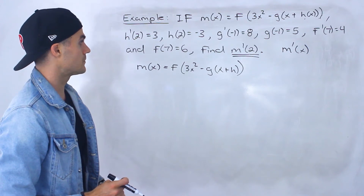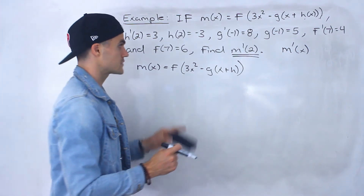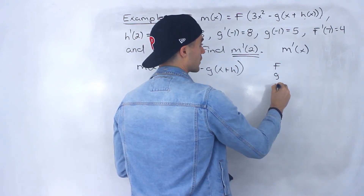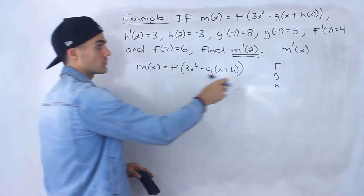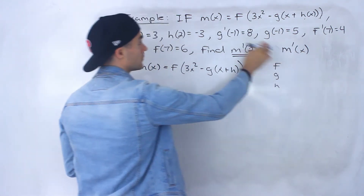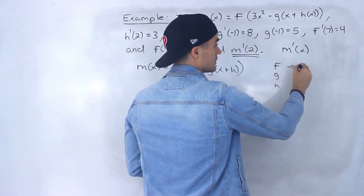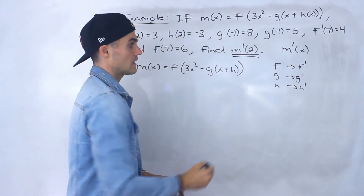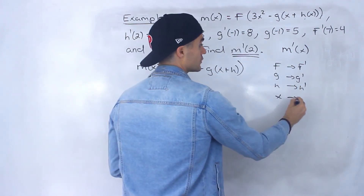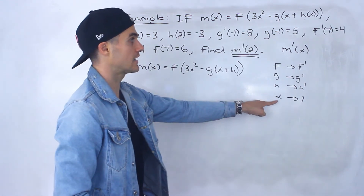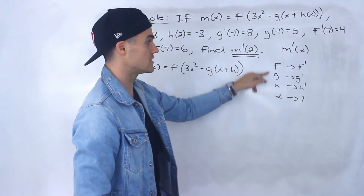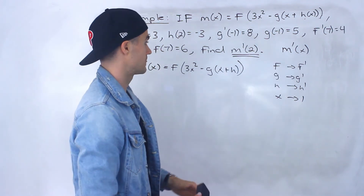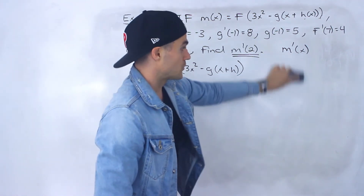Before getting into this, whenever I'm going to derive f, g, or h, remember — those aren't the independent variables; x is. So whenever you derive these, it's going to be f prime, g prime, h prime. If you ran into an x, the derivative of that would be 1 because that's the independent variable. But f, g, and h are not the independent variables, so their derivatives are f prime, g prime, h prime.